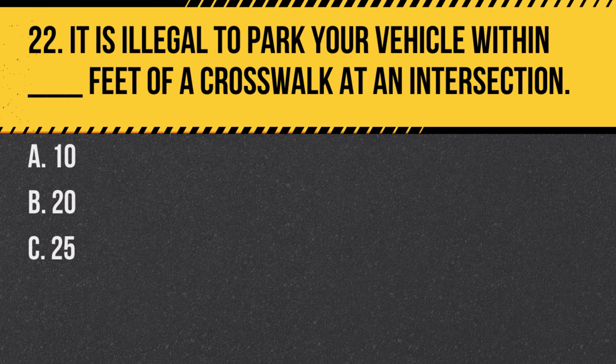Question 22. It is illegal to park your vehicle within how many feet of a crosswalk at an intersection? a. 10. b. 20. c. 25. Answer: b. 20 feet. Parking too close to a crosswalk can obstruct visibility for pedestrians and drivers.